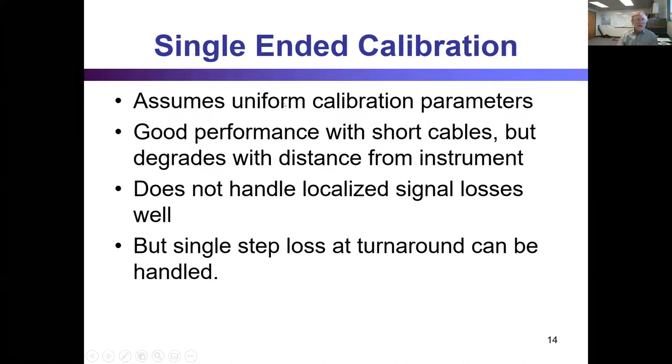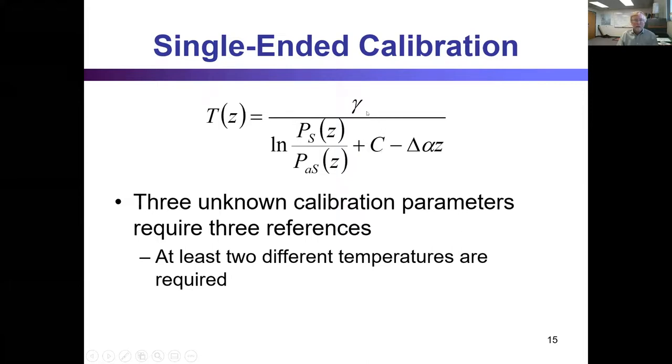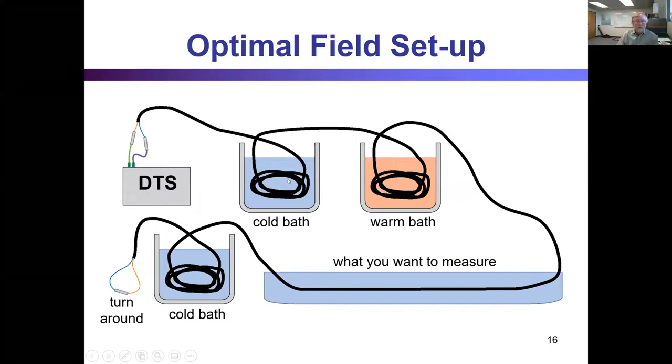The single-ended calibration assumes uniform calibration parameters in space. We can do a calibration every time we take a measurement, so it's not constant and uniform in time, but in space. It's good for short cables where we don't have much step losses. It can't handle these step losses well—we can handle one or two. And again, three unknowns—gamma, C, and delta alpha—requires at least three reference temperatures, and two of them need to be different, at least. Otherwise you can't invert the matrix. So here's commonly what we would do. We'd have a DTS, we'd put our cable through a cold bath, a warm bath—this is a duplexed measurement. We'd go out to what we're measuring, and if we're lucky enough, put some cable out in another cold bath or a warm bath someplace out in the field. And when I say some, you typically want to have at least 10 or 20 DTS measurement points in your calibration bath. So if your instrument is returning a signal every one meter, you want to have 10 meters, 20 meters in these baths.